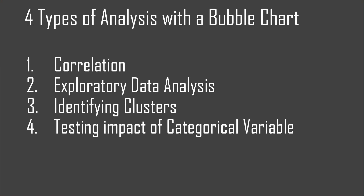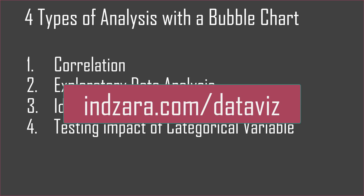These are the four types of analysis you can do effectively with a bubble chart: correlation, exploratory data analysis to get started with the data, finding clusters or patterns within the data, and using a predefined category to analyze its relationship with the three quantitative variables. If you have suggestions or other types of analysis that would work well with the bubble chart, please post them in the comments. For more videos on data visualization in Excel, please visit inzara.com — links are in the video description below. Thank you very much for watching.